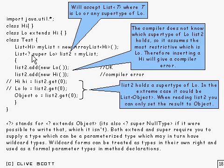Well, now it's time to look at the other case, which is super down here. What we've got is pretty much the same, except that now my list is a list of Hi, and we've got list2 which is something which is super Lo. What that means, of course, is that it will accept List of type T, where T is Lo or any super type of Lo.